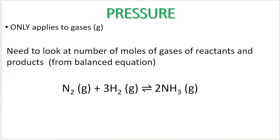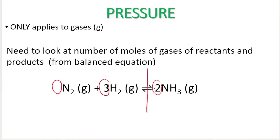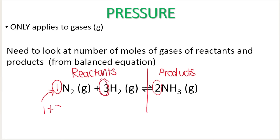When dealing with pressure, we look at the balanced chemical equation — it has to be balanced — and we look at the number of moles of gases of reactants and products. These numbers tell me the number of moles of gases of reactants and products. Reactants are on the left-hand side and products are on the right-hand side. I have one mole of nitrogen gas plus three moles of hydrogen gas, so four moles of gas on the left-hand side as reactants. On the right-hand side, I only have two moles of gas as a product.